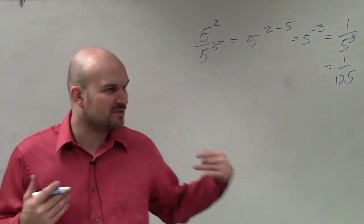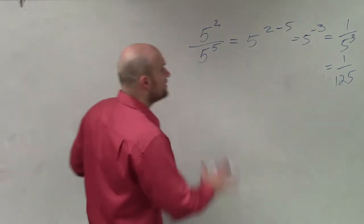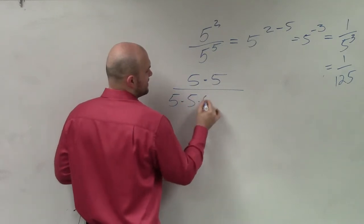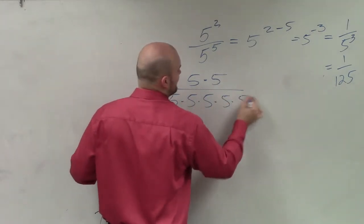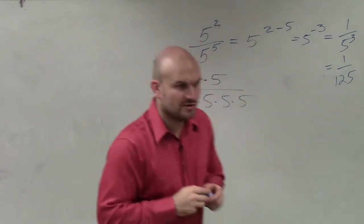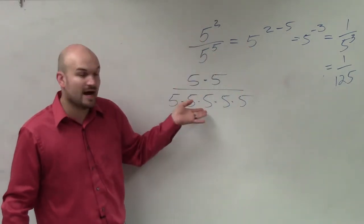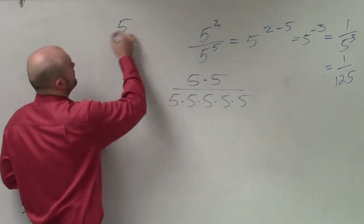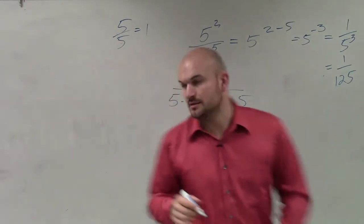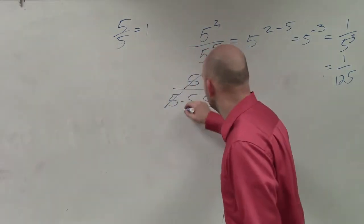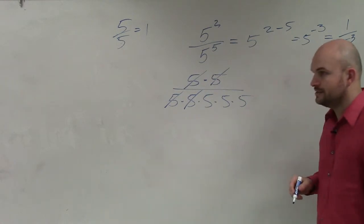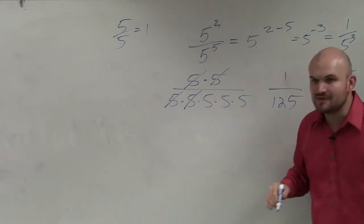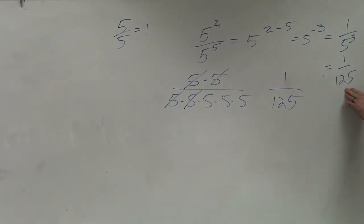Now, why does that negative exponent thing work? We can always write this out: 5 times 5 divided by 5 times 5 times 5 times 5 times 5. This is the written-out representation of that. Any number divided by itself is equal to 1, so those cancel out, and I'm just left with 1 over 5 times 5 times 5, which is 125 — the exact same answer as before.